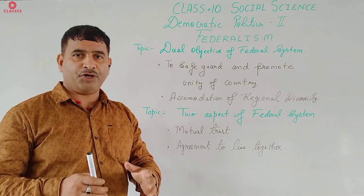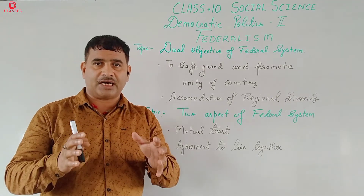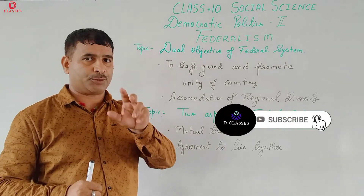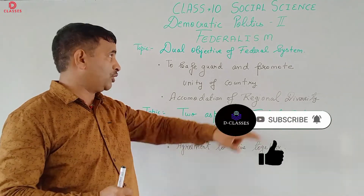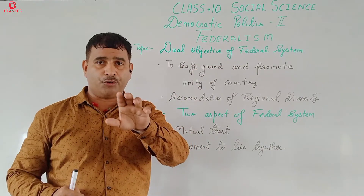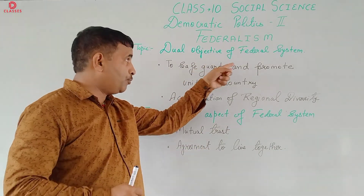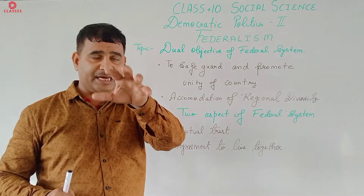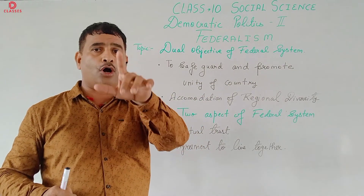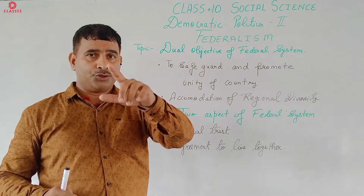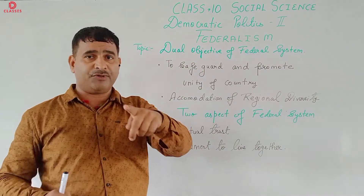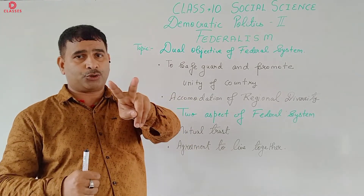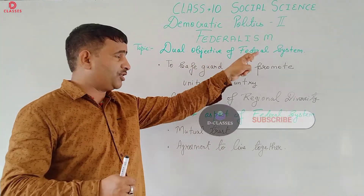Welcome to this class, part of a video series made for Class 10 Social Science. The test group we are going to discuss is Democratic Politics Part 2. The chapter is Federalism, and the topic we are going to discuss is: what are the two objectives of the federal system? This is the 7th point of the features of federalism, given as a separate question because it has been asked by the board as a two-mark question.